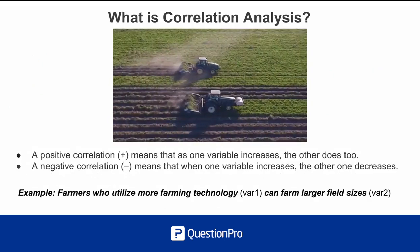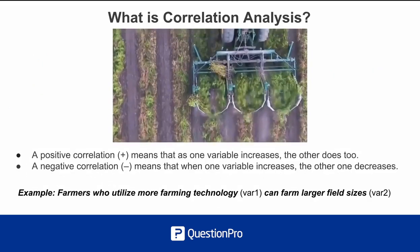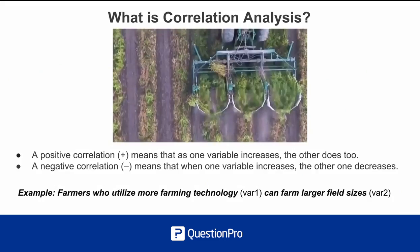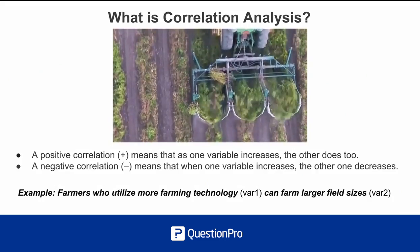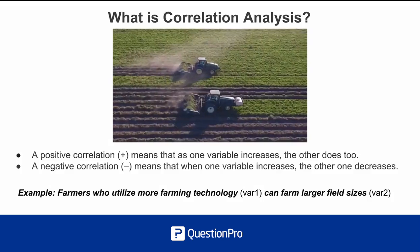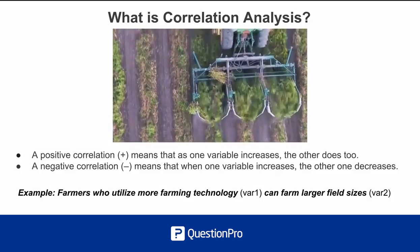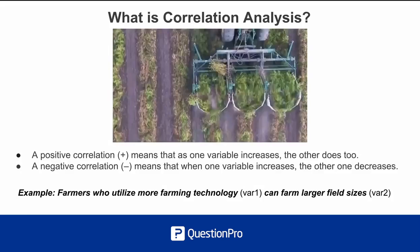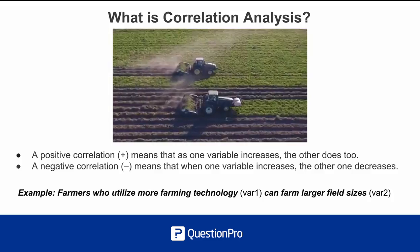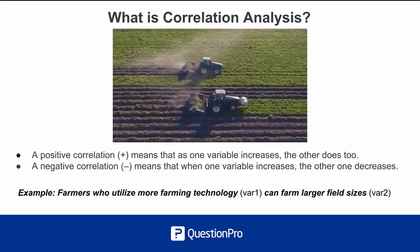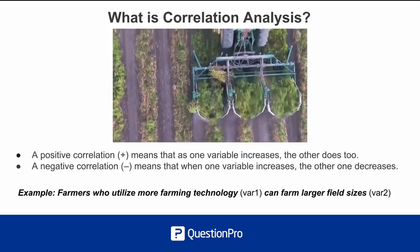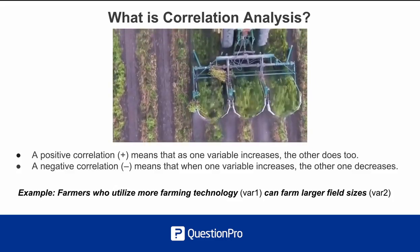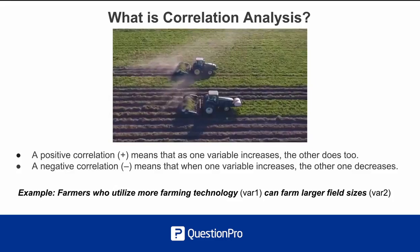When it comes to correlation analysis, the relationship of the correlation will give a direction, which is either positive or negative in nature. A positive correlation means that as one variable increases, the other one does as well. And a negative correlation means that when one variable increases, the other one decreases.